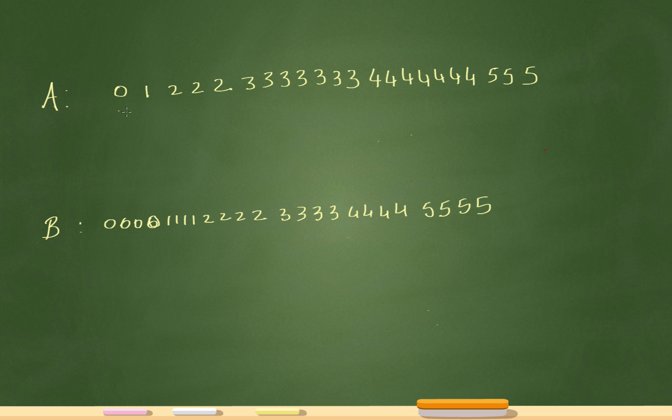Class A is saying there's one person with zero siblings, one person has one sibling, three people have two siblings, seven people with three siblings, seven people with four siblings.